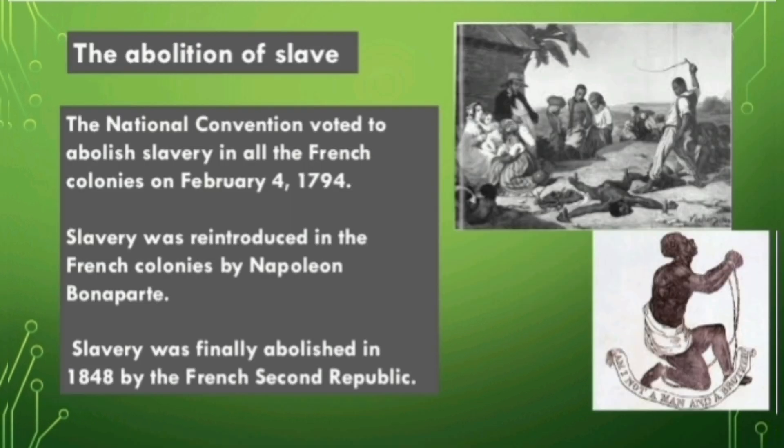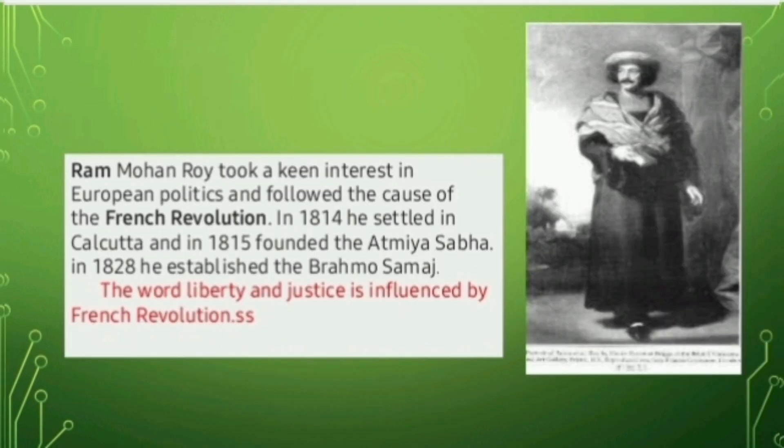Here is another picture showing the abolition of slavery. The National Convention voted to abolish slavery. But when Napoleon came into power, he reintroduced the slavery system. Finally, in 1848, the slavery system was totally removed.